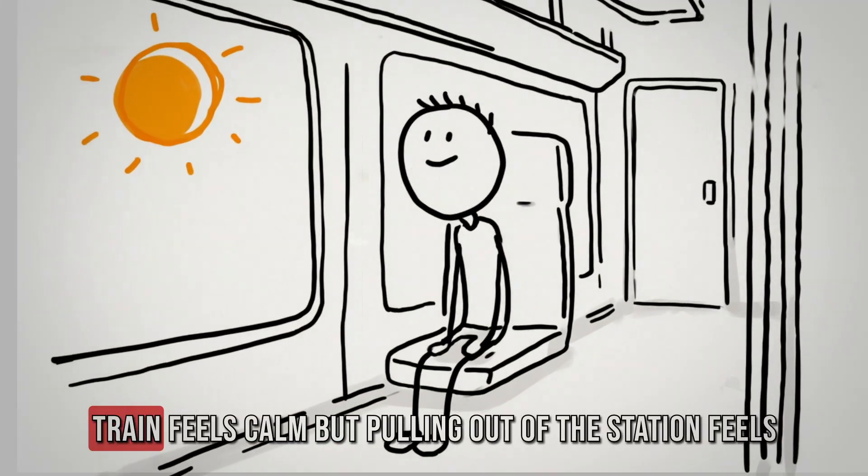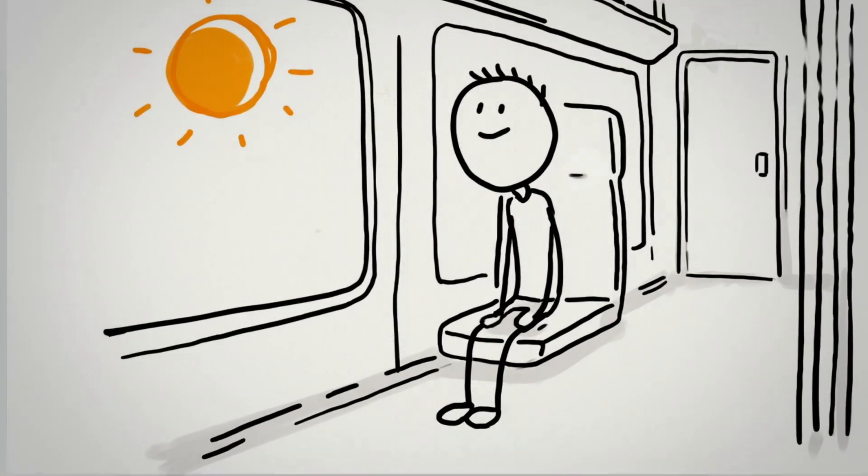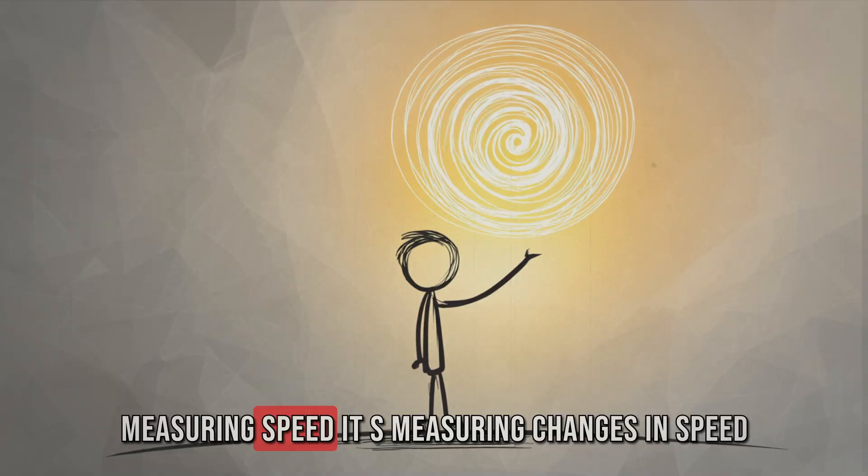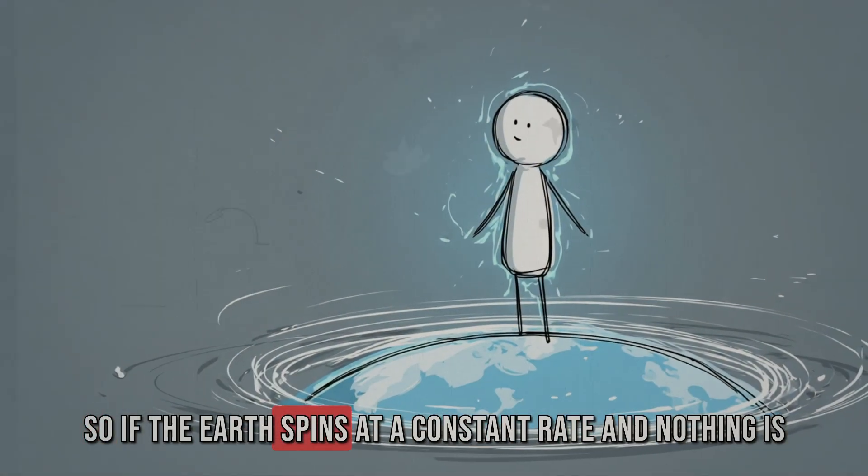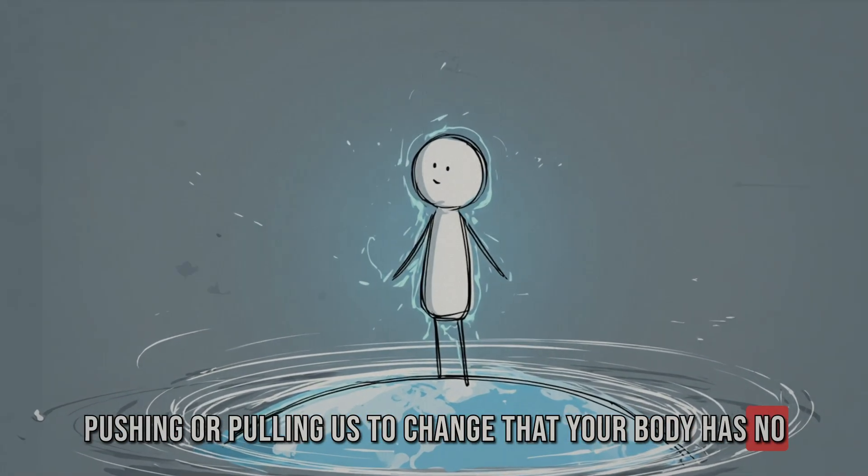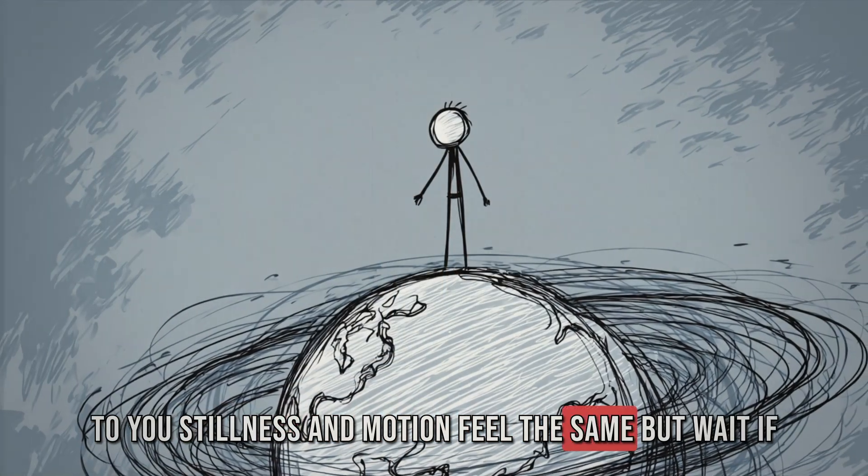That's why sitting in a fast-moving train feels calm, but pulling out of the station feels like movement. Your inner ear, the part responsible for balance, isn't measuring speed. It's measuring changes in speed. So if the Earth spins at a constant rate and nothing is pushing or pulling us to change that, your body has no reason to sound the alarm. To you, stillness and motion feel the same.